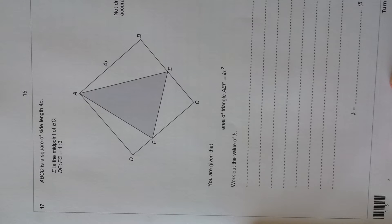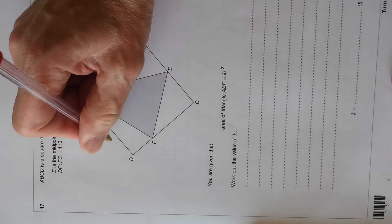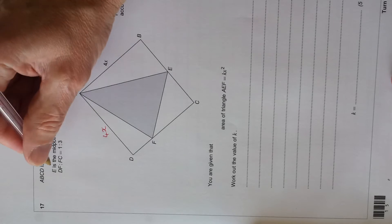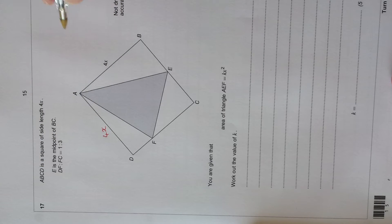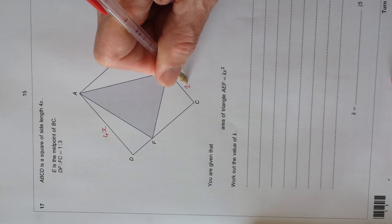So let's put all the information on that we know. This is a square, and the side is 4x, so this is 4x here. E is the midpoint of BC, so that's the midpoint there. So this must be 2x, and this side must be 2x.